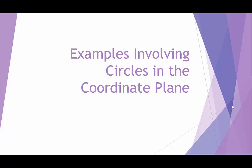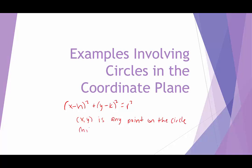Welcome to HelpYourMath.com. In this video, we're going to look at examples involving circles in the coordinate plane. Just to review: the standard form would be x minus h quantity squared plus y minus k quantity squared equals r squared, where x, y is any point on the circle, h, k is the center of the circle, and r is the radius of the circle.